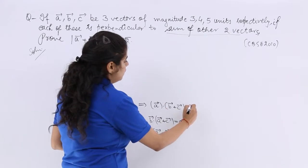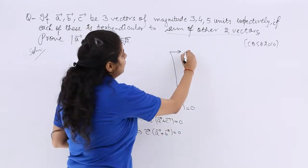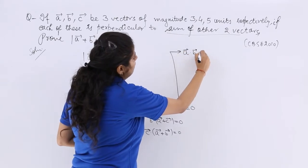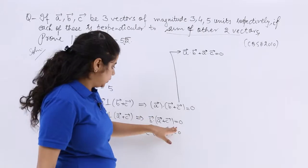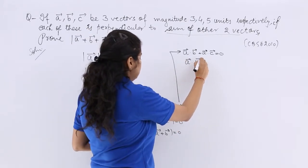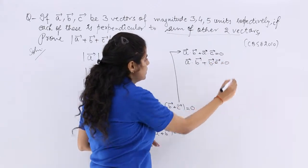So this becomes the first thing if I write here. A vector dot B vector plus A vector dot C vector is equal to 0. Here it is B vector dot A vector plus B vector dot C vector is equal to 0.